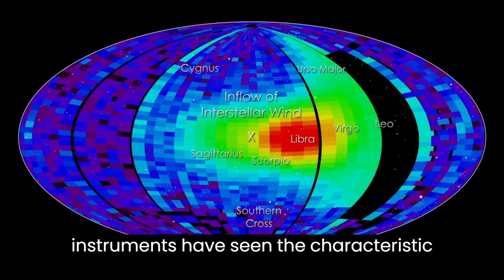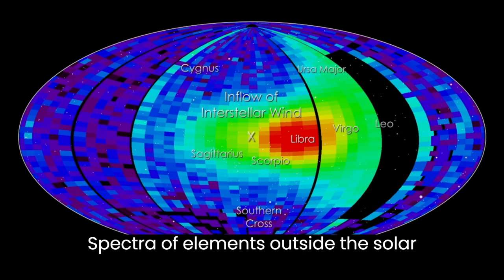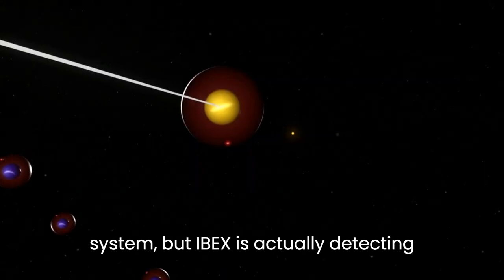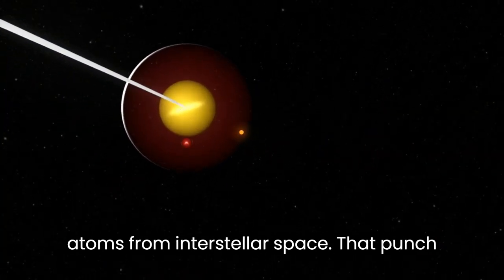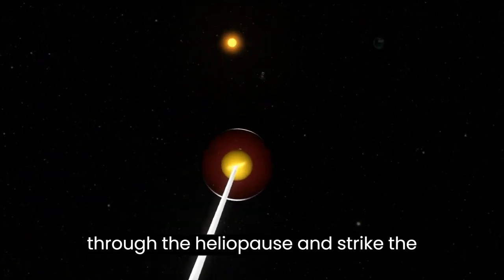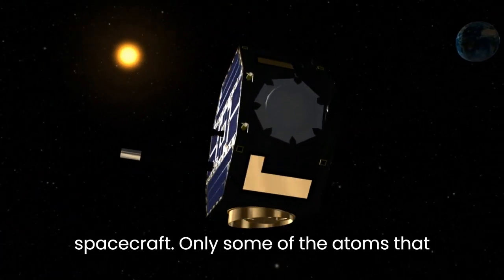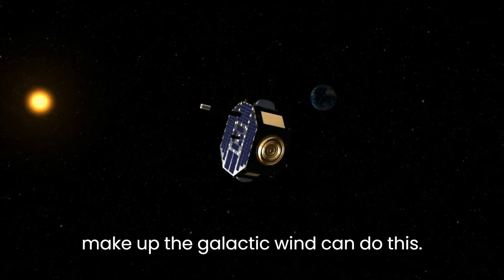Many instruments have seen the characteristic spectra of elements outside the solar system, but IBEX is actually detecting atoms from interstellar space that punch through the heliopause and strike the spacecraft. Only some of the atoms that make up the galactic wind can do this.